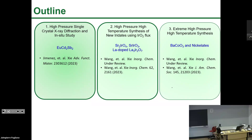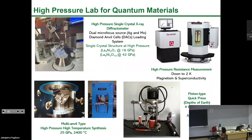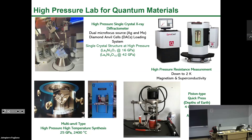This is my high pressure lab for quantum materials. We have an on-site single crystal X-ray diffractometer to study crystal structures under extreme high pressure. This diffractometer has two sources — silver and molybdenum — and the reason I love having two sources is not just for high pressure studies, but also because we can use the two different sources to map defects in crystals.